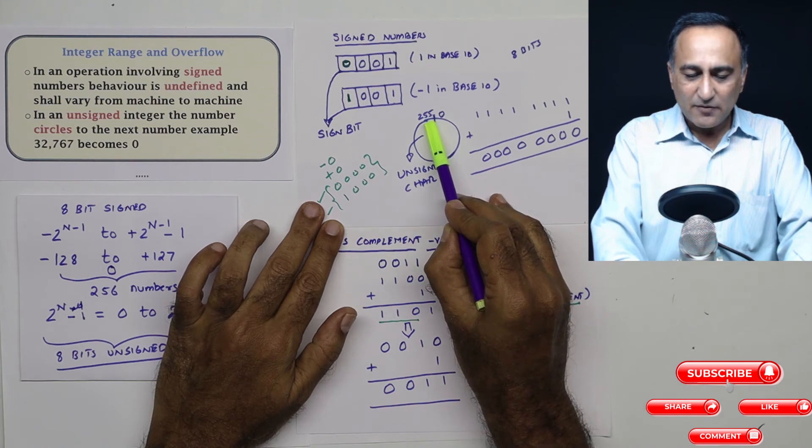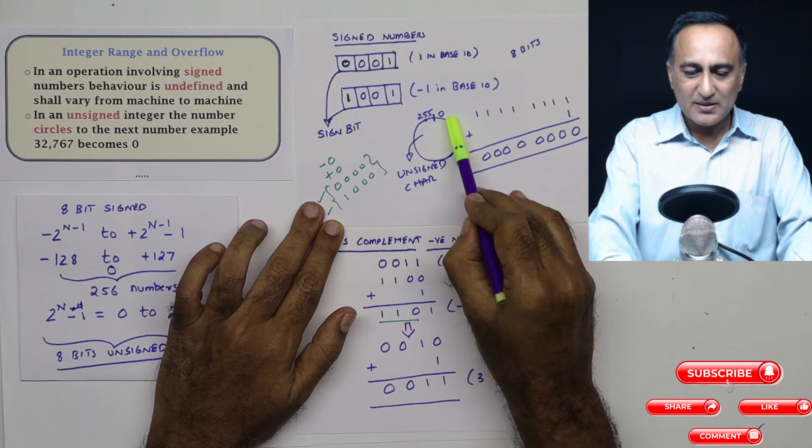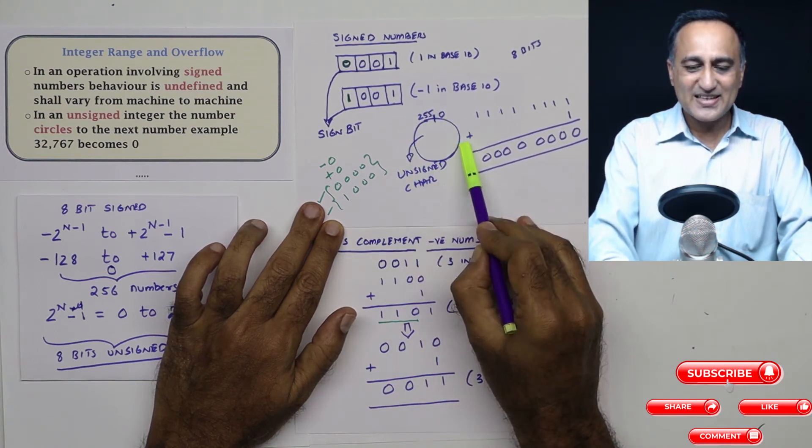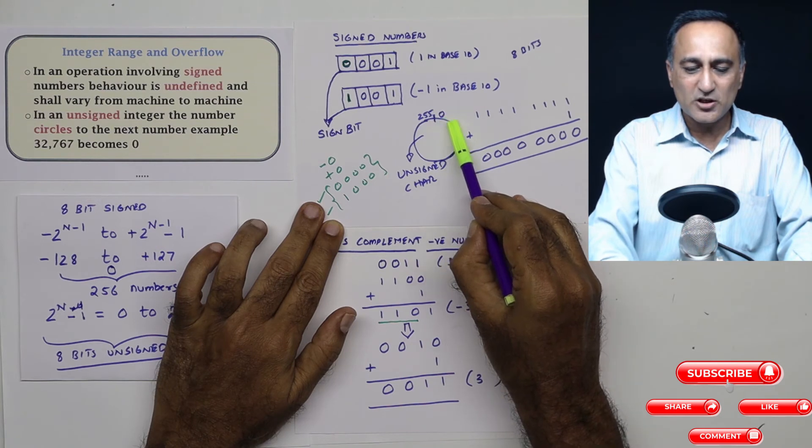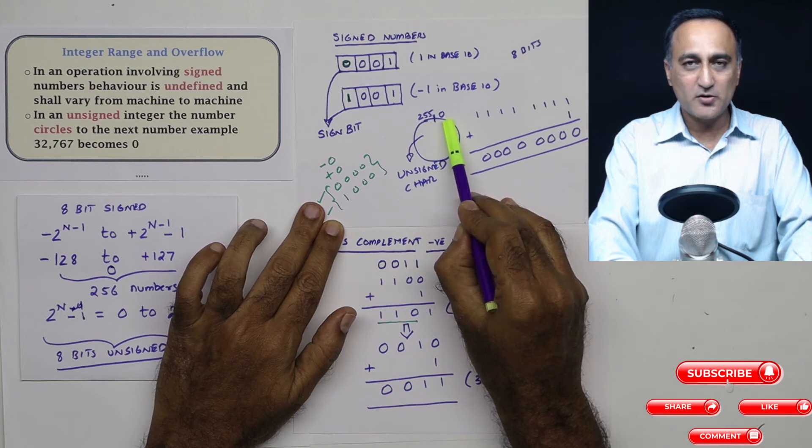So for an unsigned number, when I add one to 255 in an eight bit representation, it's pushed and becomes zero. And again, it continues in this endless cycle. If I add 256 to zero, it is again going to come back to zero. Or if I add one to 255, it's going to be zero.